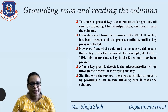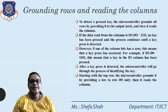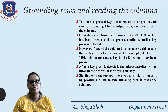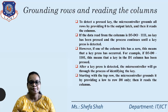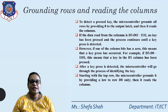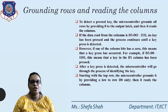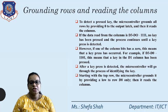If the data read from columns d0 to d3 is 1111, no key has been pressed and scanning continues. However, if one of the column bits is zero, a key press has occurred. For example, if d0 to d3 reads 1101, it means the d1 column has been pressed. After the key press is detected, the microcontroller goes through the process of identifying the key.